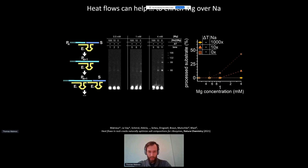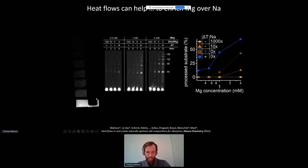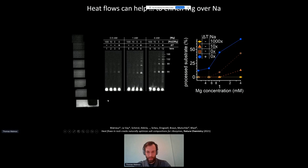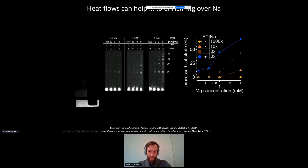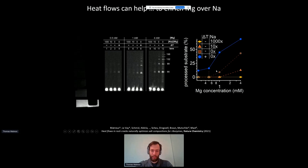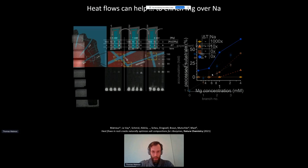If we now expose the same ribozyme together with magnesium to our heat flow chambers, we first see that the ribozyme also accumulates in the bottom fraction, as shown in the video on the left. But even lower magnesium concentrations — down to 250 micromolar — suffice to drive some ribozyme activity, which then increases further for higher concentrations. We then combined multiple heat flow chambers, feeding the output of the first into the second and so on.